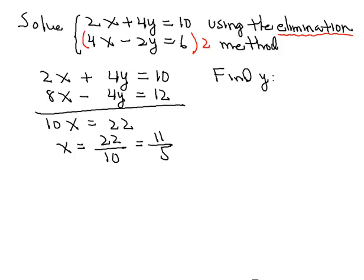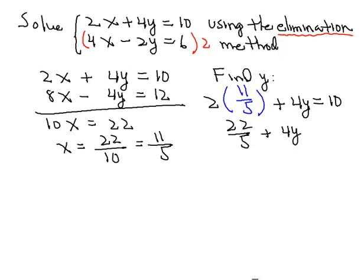So let's take the first equation and substitute then into the first equation. 2 times 11 over 5 plus 4y is equal to 10. So we'll have 22 fifths plus 4y is equal to 10.